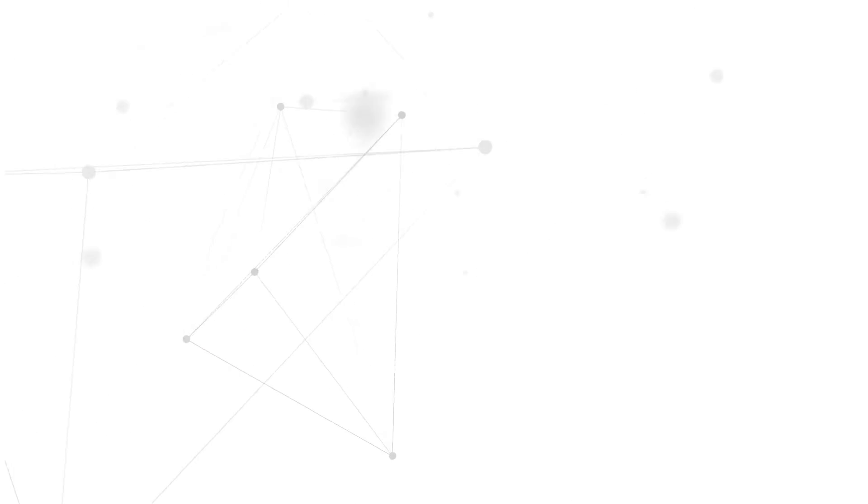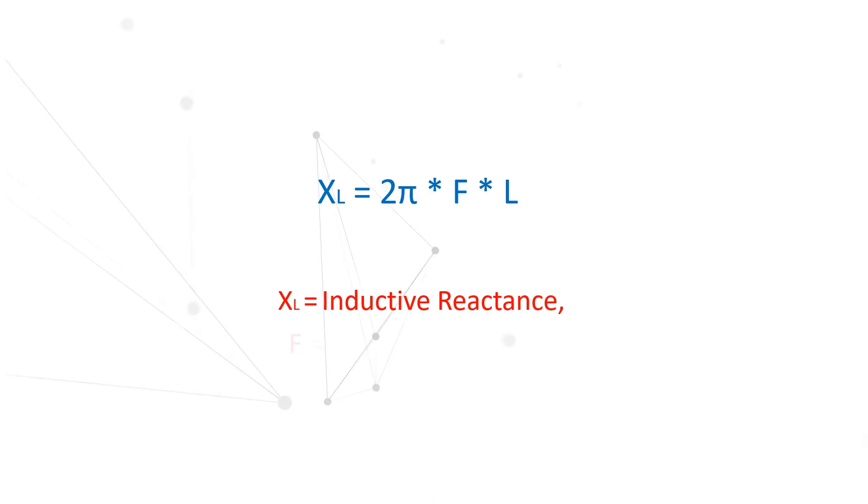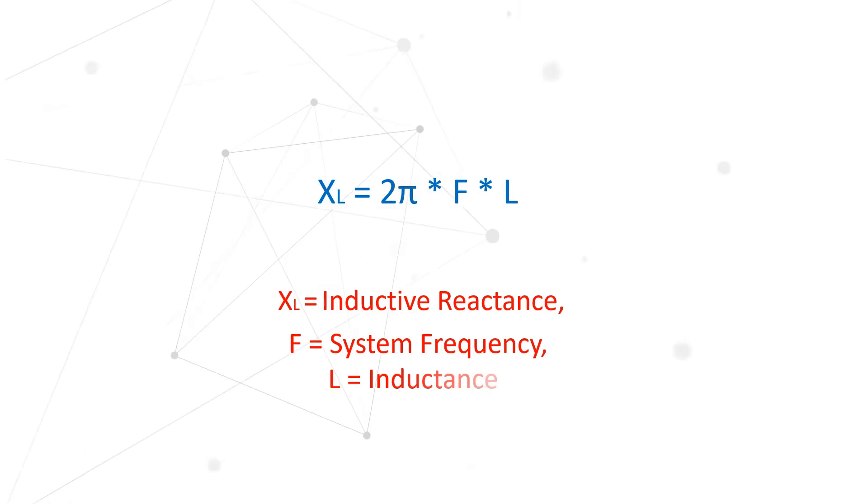As frequency increases, the inductive reactance of the coil rises. This creates high impedance for high frequency signals and low impedance for low frequency signals, effectively blocking the high frequency carrier signal from entering power circuits.